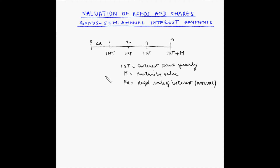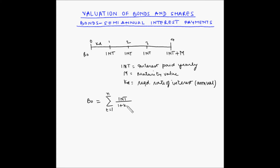When interest is paid on an annual basis, the bond value B0 — the present value of the bond — is equal to sigma t equals 1 to N of INT divided by (1 plus KD) to the power t, plus M divided by (1 plus KD) to the power N, where N is the number of years to maturity.